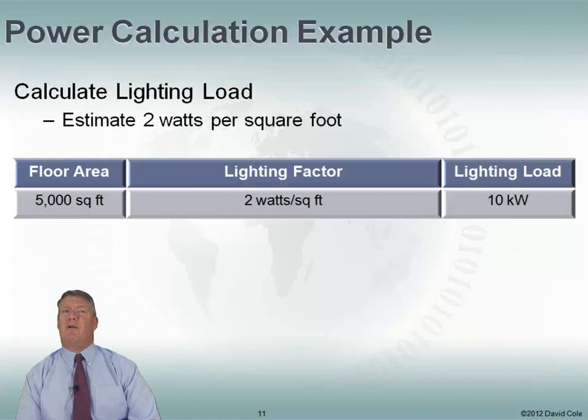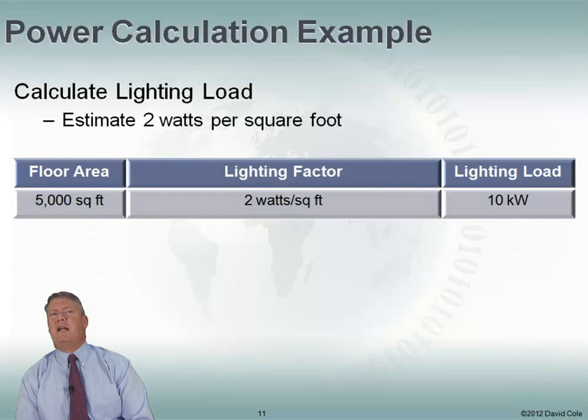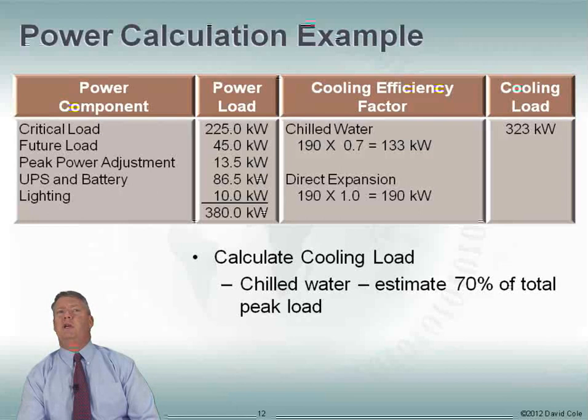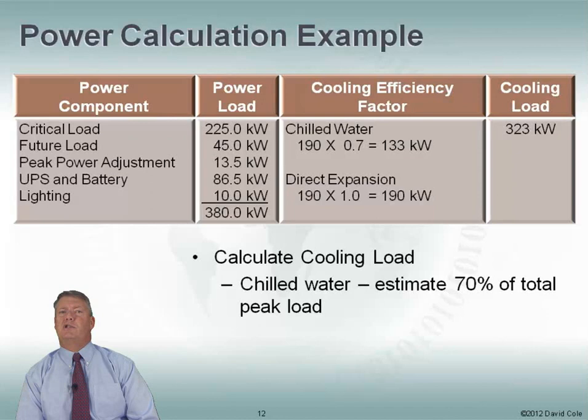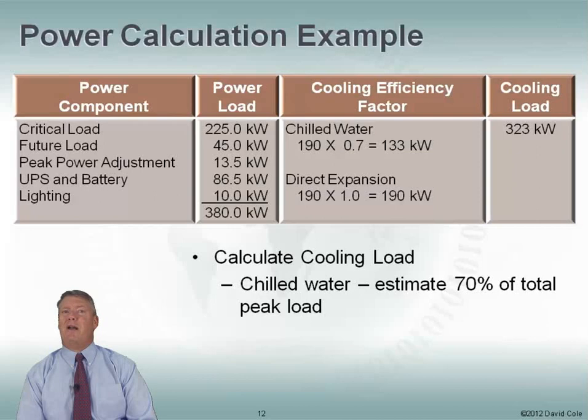Now let's look at lighting. For lighting purposes, we estimate about 2 watts per square foot. We have 5,000 square feet at 2 watts per square foot — that's 10 kilowatts for our lighting load. Now we start adding all of these up: our critical load of 225 kilowatts, 20% for future load, a peak power adjustment, UPS and battery overhead, and lighting. And now we're up to 380 kilowatts.